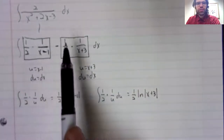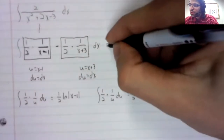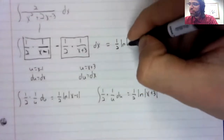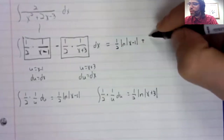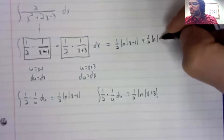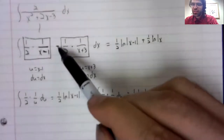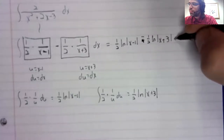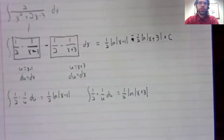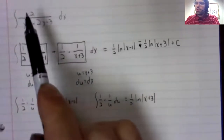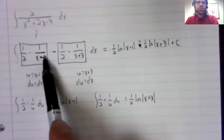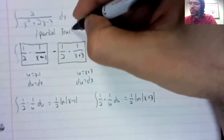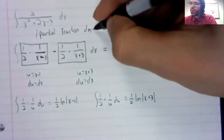And of course if you can integrate this and you can integrate this, you can integrate this whole thing: one half of a natural logarithm minus one half of another natural logarithm. The process of going from the original rational function to this sum is the partial fraction decomposition.